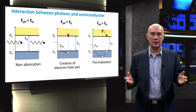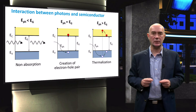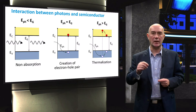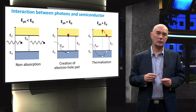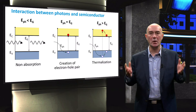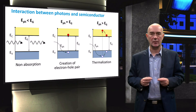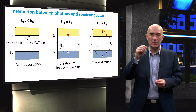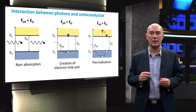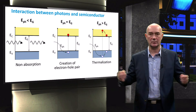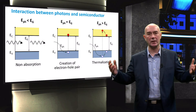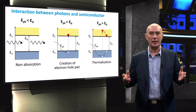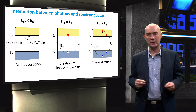On the other hand, photons with energy higher than the bandgap will be absorbed and will generate electron-hole pairs. However, electrons and holes tend to occupy the most stable states, which are at the edges of the bands. Therefore, the photon energy that is in excess of the bandgap energy will be released as heat. This process of releasing the excess energy of electrons and holes to the lattice is known as thermorelaxation or thermalization.